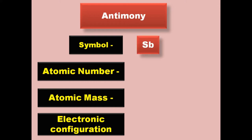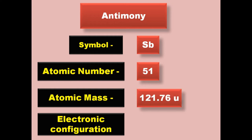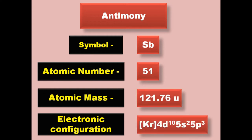Antimony has symbol Sb, atomic number 51, atomic mass 121.76, electronic configuration [Kr] 4d10 5s2 5p3. Antimony is a metalloid and exists in solid form at room temperature.